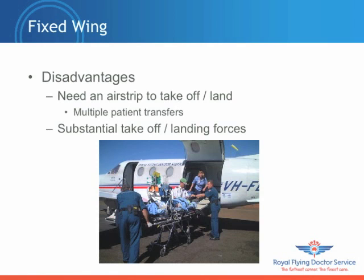Some of the disadvantages of fixed wing: you require an airstrip to take off or land from, which may not always be in close proximity to your patient or hospital. This necessitates the use of secondary transport, usually a ground ambulance, getting us back to the situation of multiple patient handling and multiple physical transfers. There are also substantial takeoff and landing forces generated by fixed wing aircraft, which we'll discuss more when covering the physiological consequences of retrieval.